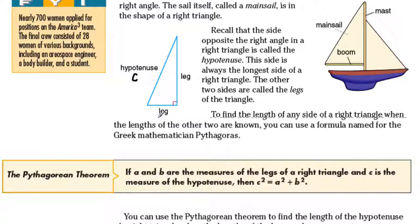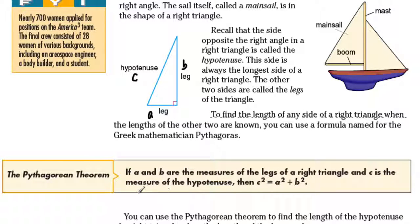So if this is your C, and this is your A, and that is your B, this will hold true that C squared is equal to A squared plus B squared. Now where did this formula come from? Let's find out — I have a video on this, so let's watch how this formula came about.